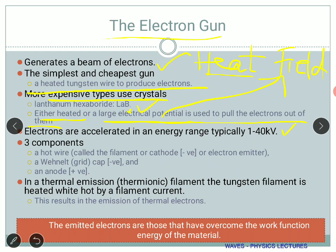There are three main components of the electron gun: a hot wire called the filament or cathode or electron emitter, the Wehnelt grid, and an anode. The filament might be a tungsten wire or lanthanum hexaboride depending on how much you can afford. The Wehnelt grid is basically a cap with a gap. The anode is positive in nature and will attract the excess electrons not needed for the experiment.